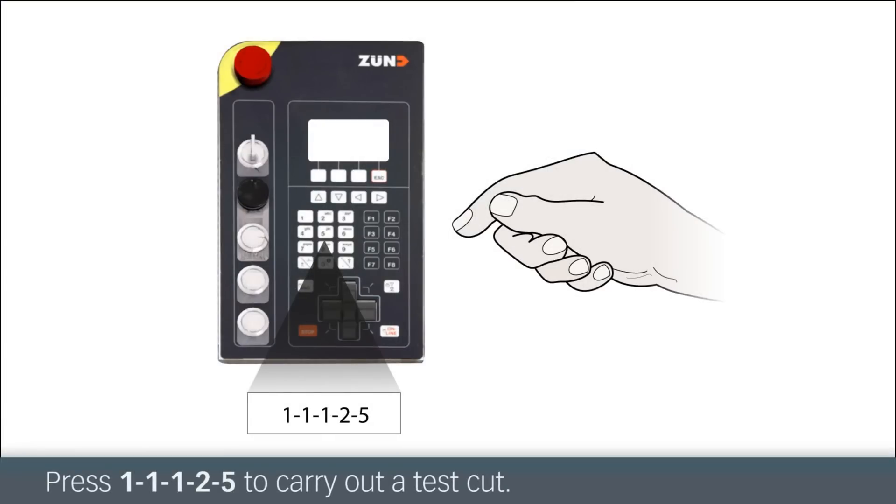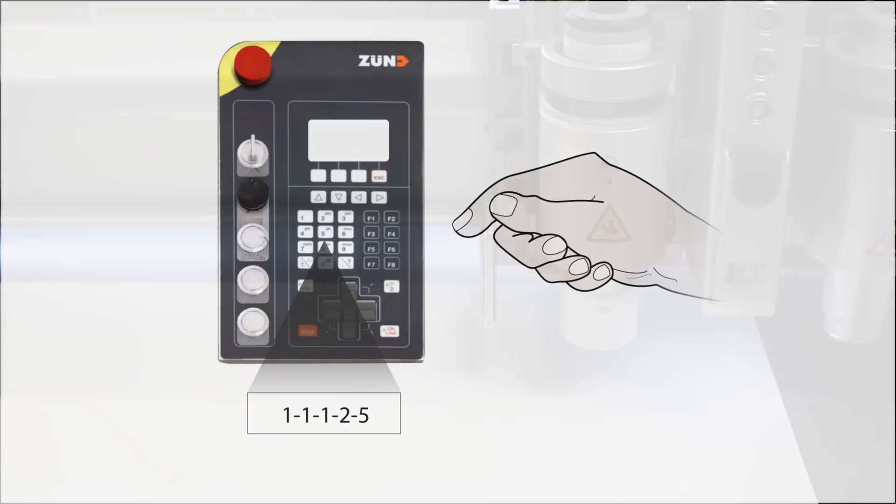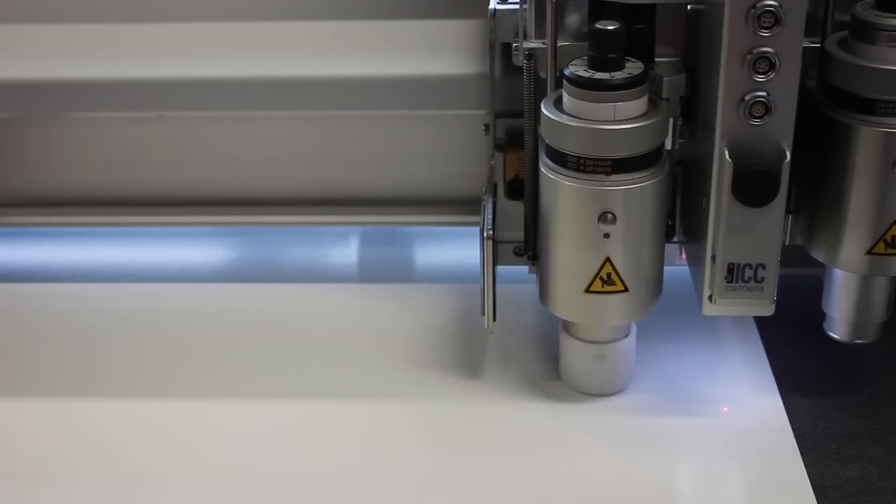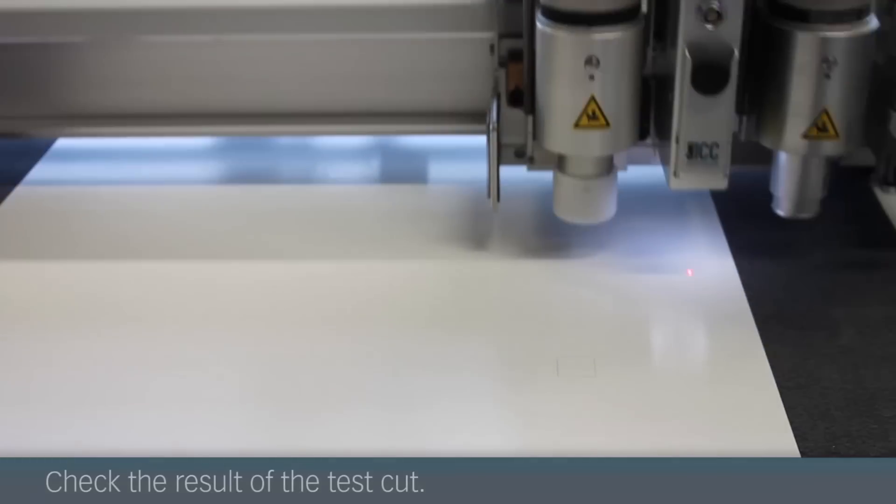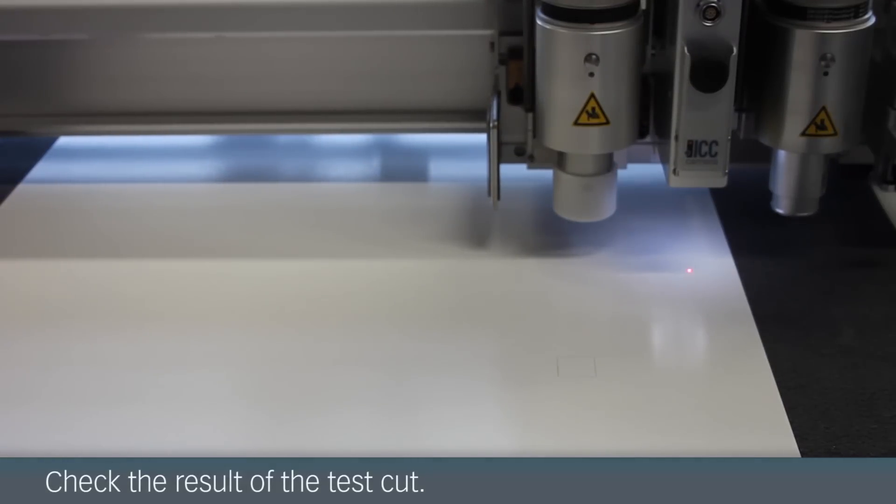Then press 11125. The cutter will now carry out a test cut. Check the result of the test cut and adjust the height if necessary.